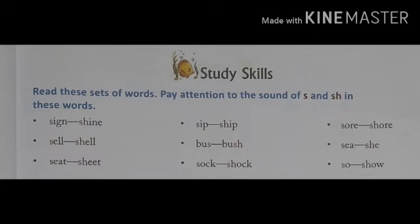Jo S sound se bana hua hai, uska S sound ka pronunciation — sound kaisa hota hai? S. S ka sound kaisa hota hai? S. And SH — consonant jo letter hai, SH — uska sound kaisa hota hai? SH. So first, we will read these words. Pehle hum log yeh words ko read karenge. Understood?